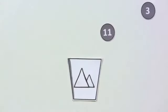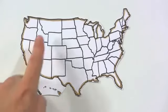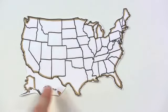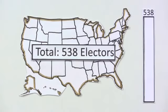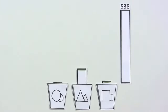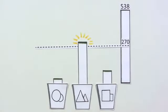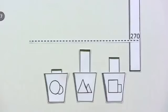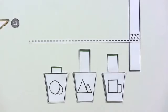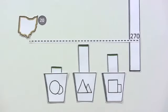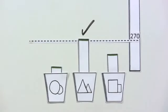And the number of electors is what really matters. If you add up the electors of all 50 states and the District of Columbia, there are 538 in total. The candidate's goal on Election Day is to win the majority of 538, or 270 electors. Once a candidate wins enough states to reach the 270 majority, they have won the election and become the president-elect.